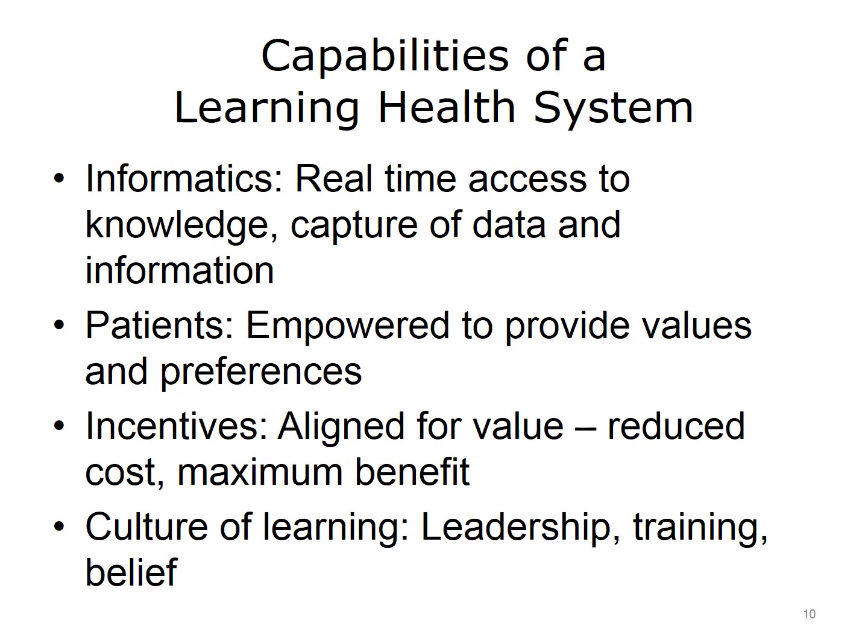What are the primary capabilities or characteristics of a learning health system? First, you must have substantial investments in informatics — the ability to capture data and information effectively, and have real-time access to knowledge. Patients are crucial, since we have to learn what they prefer and how it matches with their values. We also need to change incentives. If we're paid on volumes of visits or procedures, the system generates as many as possible rather than learning whether a particular treatment is beneficial. Finally, you need a culture of learning — people must learn to seek change and understand how to get there.